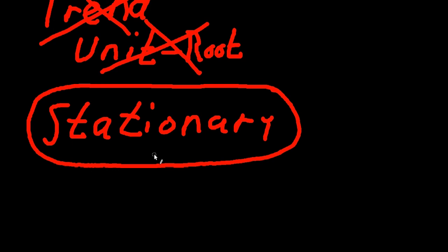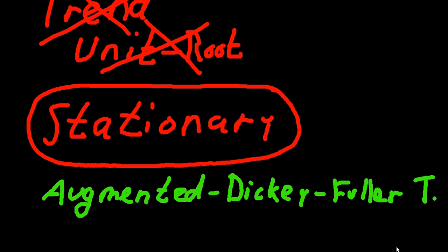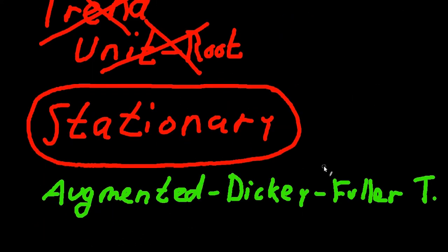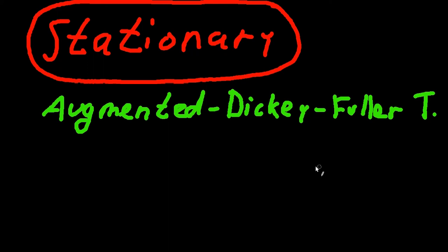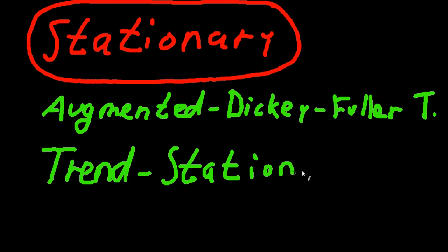How do I know if my data is stationary or not? There's a simple test for that — it's called the Augmented Dickey-Fuller test. The Dickey-Fuller test basically tests if the AR(1) coefficient is equal to one. The Augmented version also tests if your data is what we call trend-stationary — so it tests whether your data is stationary or trend-stationary.